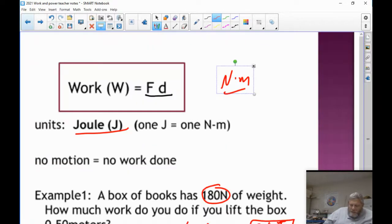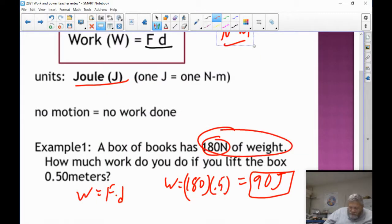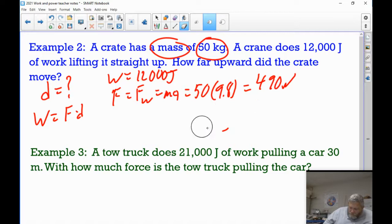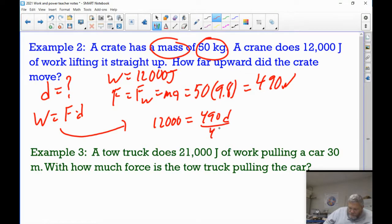And the last problem, let me back up. In the last problem, you were given the weight. Here, you're given the mass. So it's a little bit different. So 50 times 9.8 is 490. So the work is going to be 490 times the distance, which we don't know. Let's do that over again. Let's erase that. Because we know what the work is. So we're going to come over here. We know the work is 12,000. That's going to be equal to 490 times D. And we divide both sides by 490, which gives me a D of 12,000 divided by 490 of 24.5 meters.